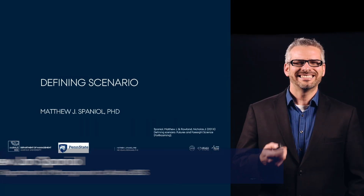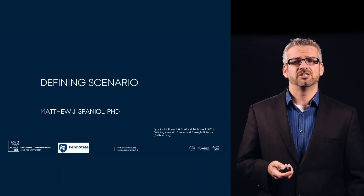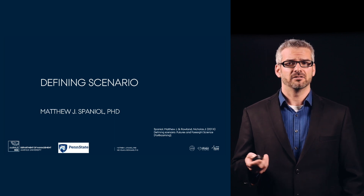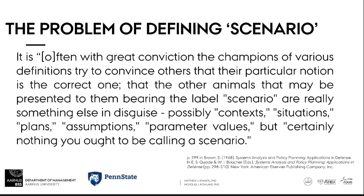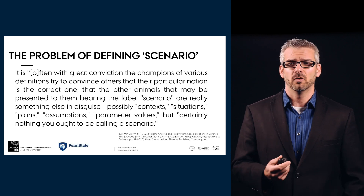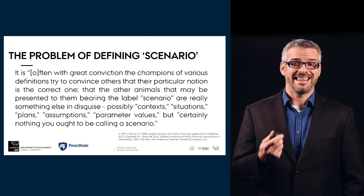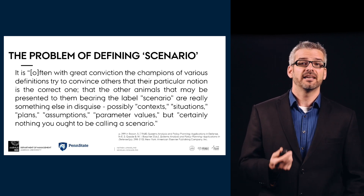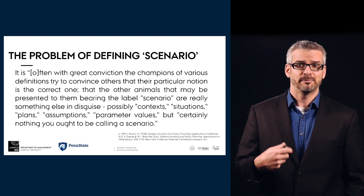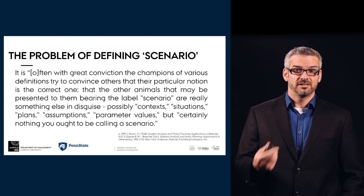The question we ask in this paper is: what exactly is a scenario, and what are the qualities that it shares with other techniques for planning for the future — other tools and other approaches? We started by looking at the history of this problem of defining 'scenario,' which goes back to 1968. Simon Brown wrote that it is often with great conviction that champions of various definitions try to convince others that their particular notion is the correct one, and that other things bearing the label 'scenario' are really something else in disguise — possibly contexts, situations, plans, assumptions, parameter values — but certainly nothing you ought to be calling a scenario. So we have this internal notion that we think we would know a scenario if we saw one, but how do we define what that is?